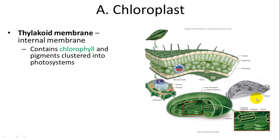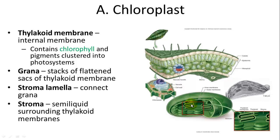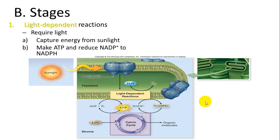The thylakoid membrane has a pigment called chlorophyll, along with other pigments. These are clustered into photosystems — specific areas within the membrane for gathering light. The thylakoid membranes are folded in stacks called grana, with connections called the stroma lamella. The stroma is the liquid surrounding the thylakoid membranes, similar to cytoplasm, containing ions important for photosynthesis.